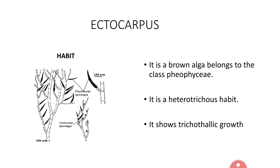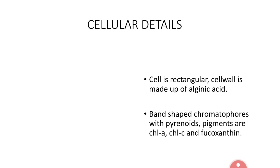As Ectocarpus shows two types of branch systems, it is also called heterotrichous habit. In every branch, cells are present one above another appearing like a row, which is called the uniseriate condition. Cells are rectangular in outline, present one above another. Each cell is enclosed by an outer cell wall made up of pectin and alginic acid, whereas the inner cell wall is made up of cellulose. Each cell shows a plasma membrane, thick cytoplasm, and a single nucleus at the peripheral part.